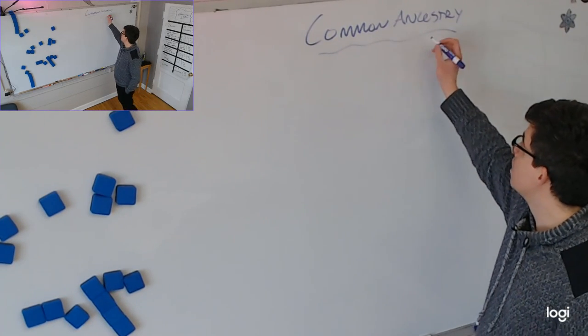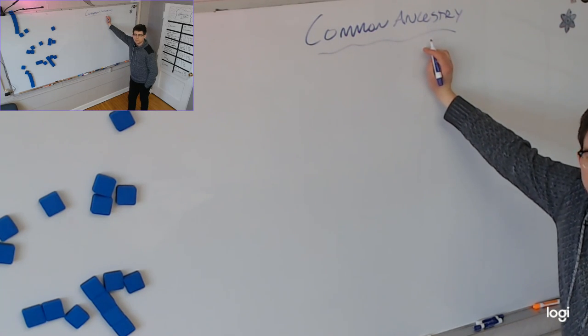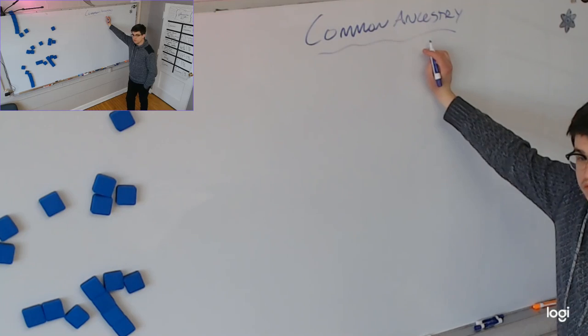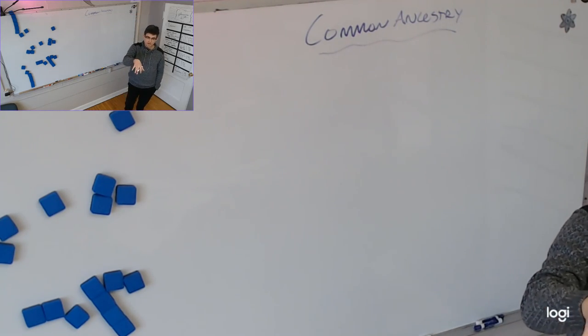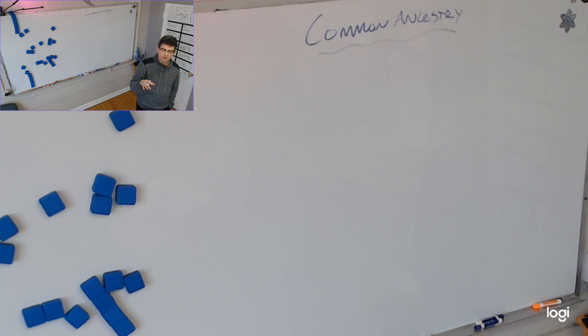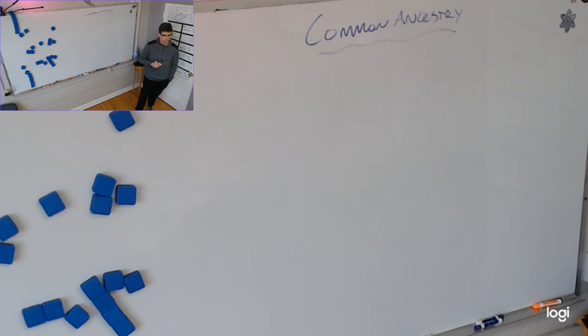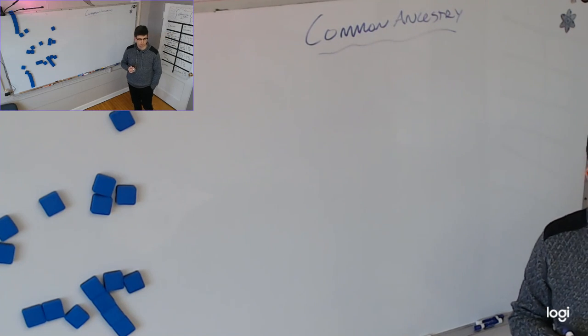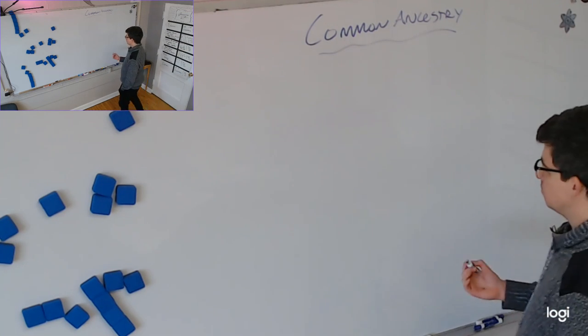So common ancestry means, first of all, what's an ancestor? Someone you're related to from a very long time ago. One of the people that previously progenitored you. These people coupled and came together and made you. That's your parents. One of your family members from a long time ago. Okay, here's you.